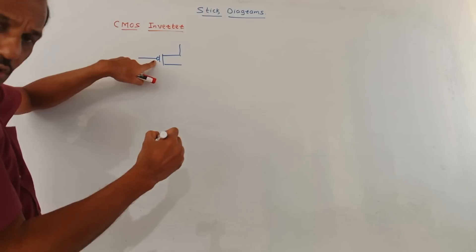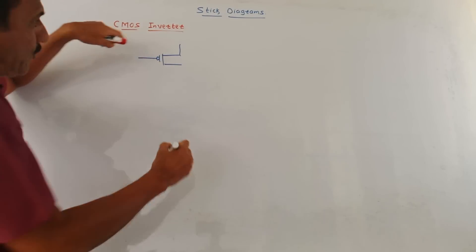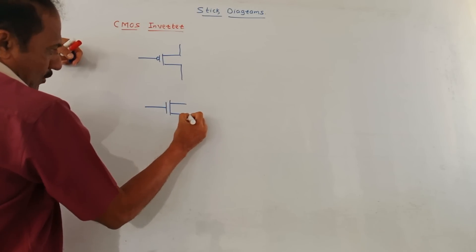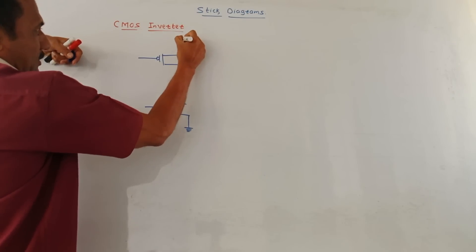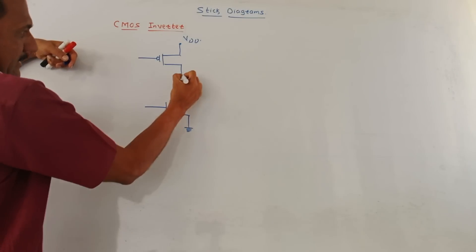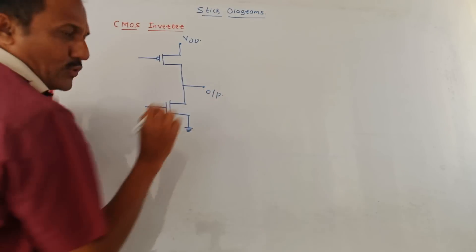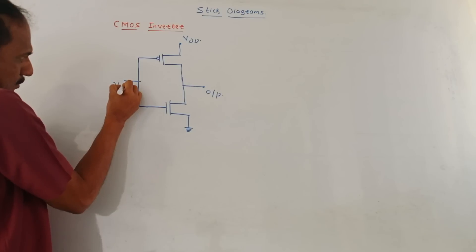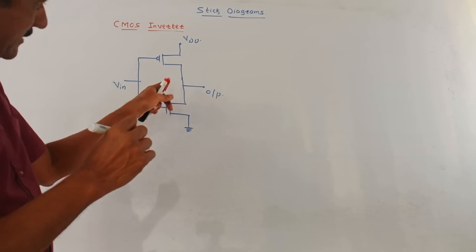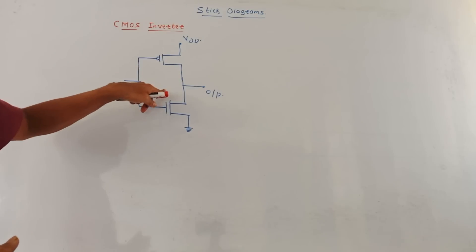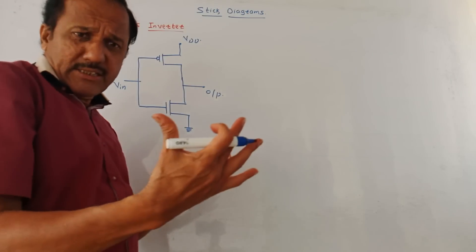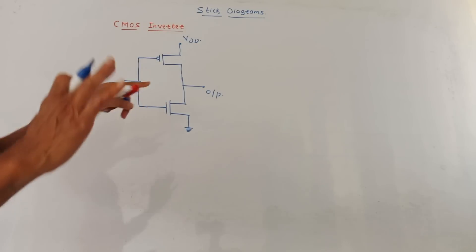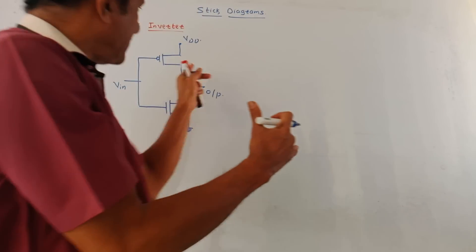Without fail, mark a bubble on the PMOS — this indicates the NOT operation. At the lower side, I will use one NMOS. The lower terminal of NMOS is connected to ground. At the top, I apply VDD. These two drain terminals are joined and from this common point I take the output. Then combine the two input terminals and apply VIN. This is the CMOS diagram for the inverter, with PUN on top and PDN at the bottom.